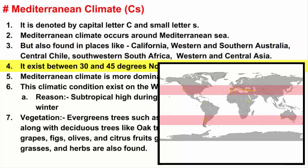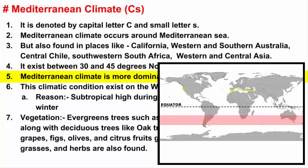Mediterranean climate roughly exists between 30 and 45 degrees north and south of the equator. However, if you look at this map, since the Northern Hemisphere has more landmass compared to the Southern Hemisphere, the existence of Mediterranean climate is more dominant in the Northern Hemisphere.